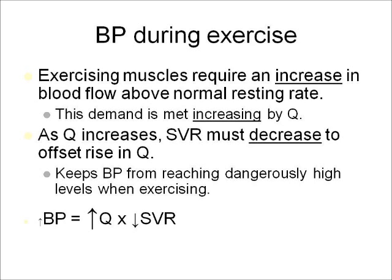Blood pressure during exercise: exercising muscles require an increase in blood flow above the normal resting rate. This demand is met by increasing Q. As Q increases, SVR must decrease to offset the rise in Q and keep blood pressure from reaching dangerously high levels. Your blood pressure does go up slightly during exercise — systolic more than diastolic. There's a large increase in Q, and a decrease in SVR to keep blood pressure from getting too high during exercise.